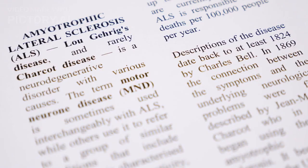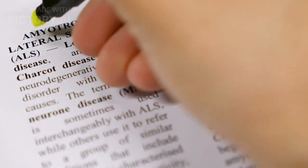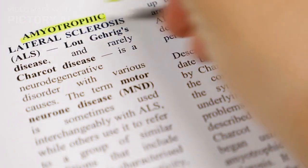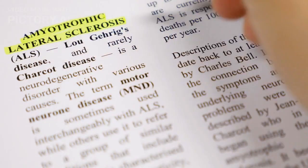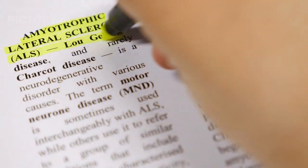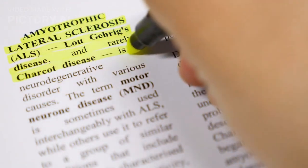ALS was first identified in 1824 and became known as a specific disease by Jean-Martin Charcot in 1869. ALS was relatively unknown until the late 1930s, when a famous baseball player named Lou Gehrig was diagnosed with ALS. ALS was also known as Lou Gehrig's disease.